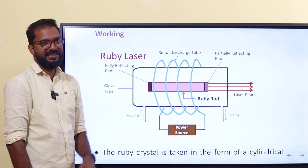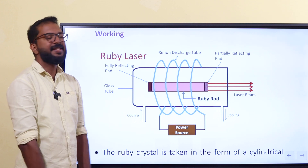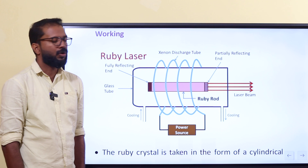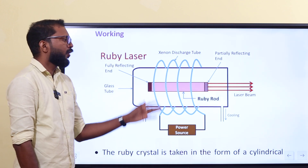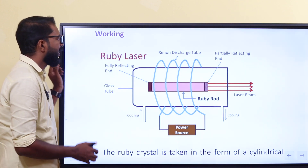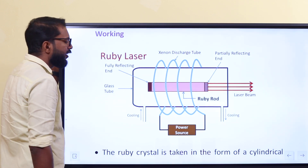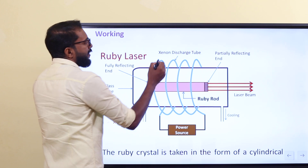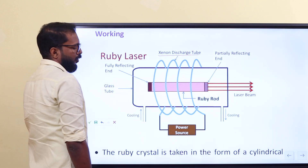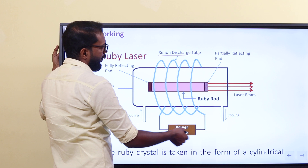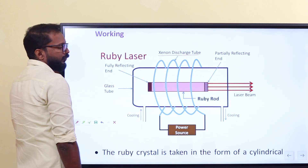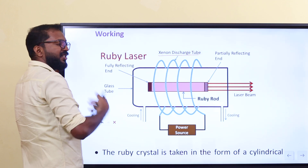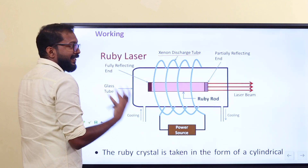The ruby rod is used as the solid state laser medium. A xenon discharge lamp is used, connected to a power supply. We use a xenon light flash to excite the ions.